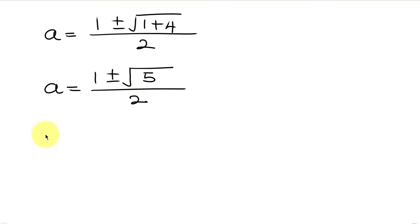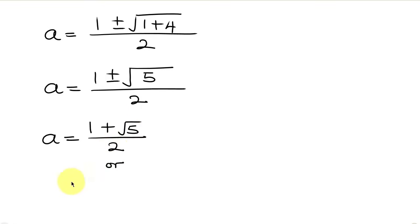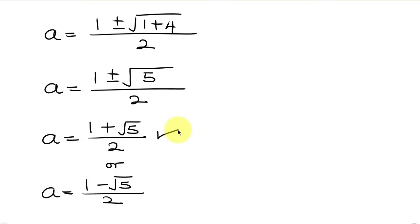We have two values of A. A equals 1 plus the square root of 5, all over 2; or A equals 1 minus the square root of 5, all over 2. Remember that a is positive, so we choose the first value since the second value is negative. So we keep in mind that A is equal to 1 plus the square root of 5, all over 2.